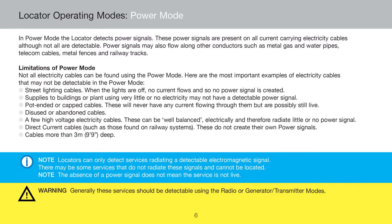Limitations of power mode: while these power signals are present in all current-carrying cables, not all are locatable. For example, if the cable is too deeply buried or the current on it isn't great enough to provide a detectable signal. Furthermore, cables that are live but not carrying current — such as street lighting cables, supply cables to buildings using no or very little electricity, and pot-ended cables — may also not be located. Some high voltage cables that are electrically well balanced might not be producing a detectable power signal.